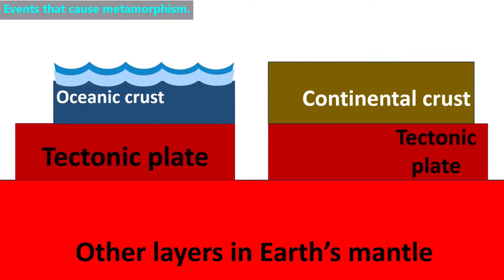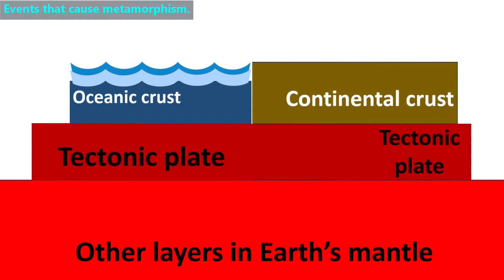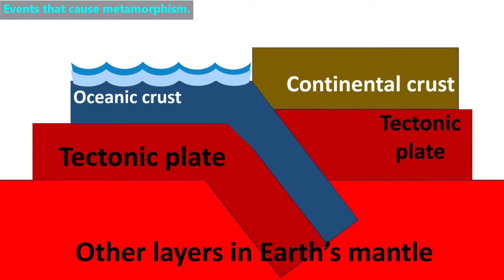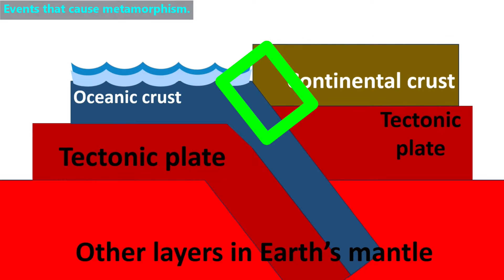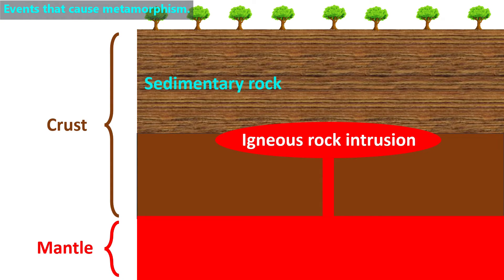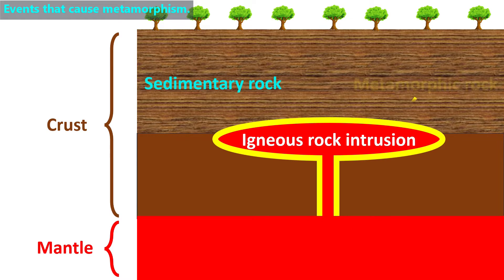The third event is being in a subduction zone, which is when the rocks of an oceanic crust and one tectonic plate slide under the rocks of a continental crust and another tectonic plate. The rocks that are sliding against each other are changing their forms. The fourth event is when a rock is near hot magma or lava. For example, when there is a crack in the Earth's crust, hot magma comes up from the mantle to form an igneous intrusion. The sedimentary rock around that hot magma will then change into a metamorphic rock.